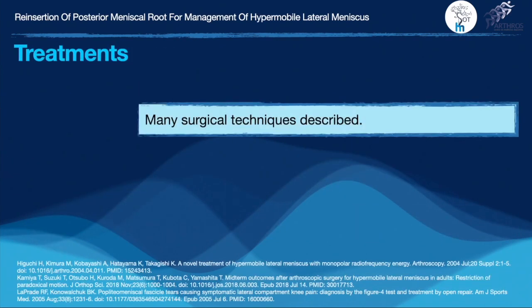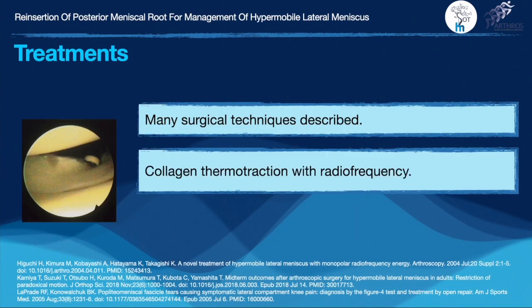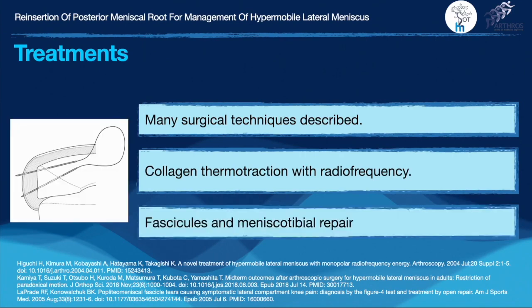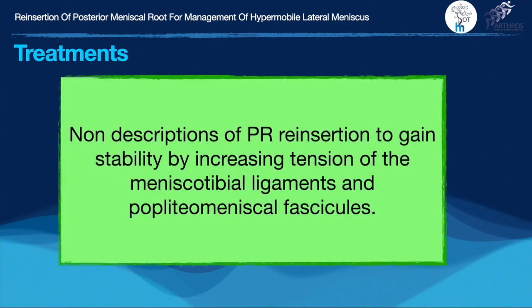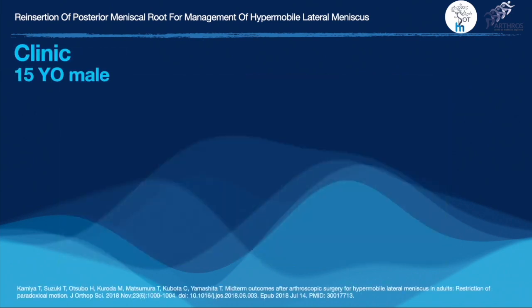For treatment, many surgical techniques have been described such as collagen thermoretraction with radiofrequency, or fascicles and meniscotibial ligament repair. However, there is no description for posterior root reinsertion for increased tension of the popliteal meniscus fascicles and meniscotibial ligaments to give stability to the meniscus.